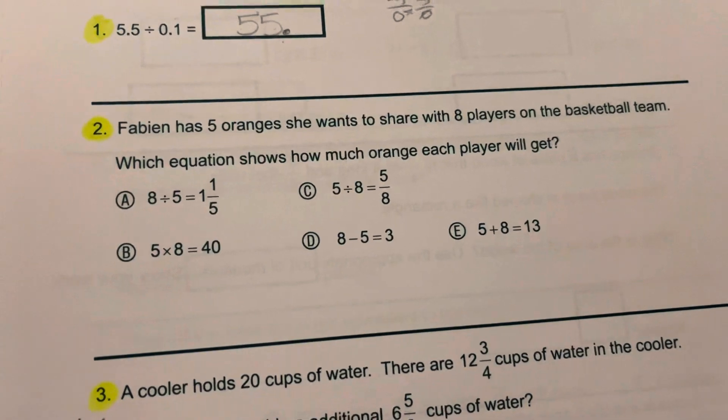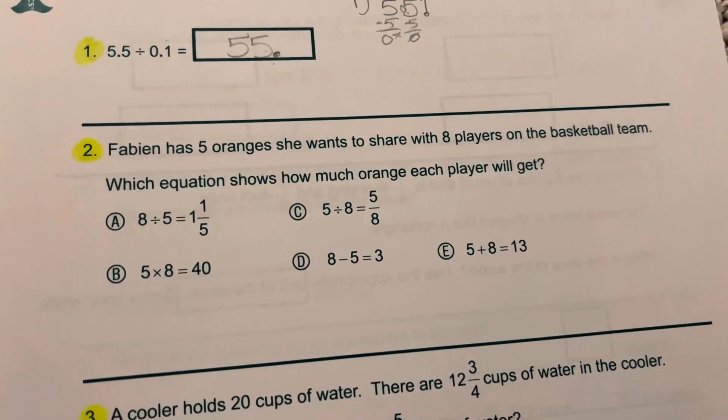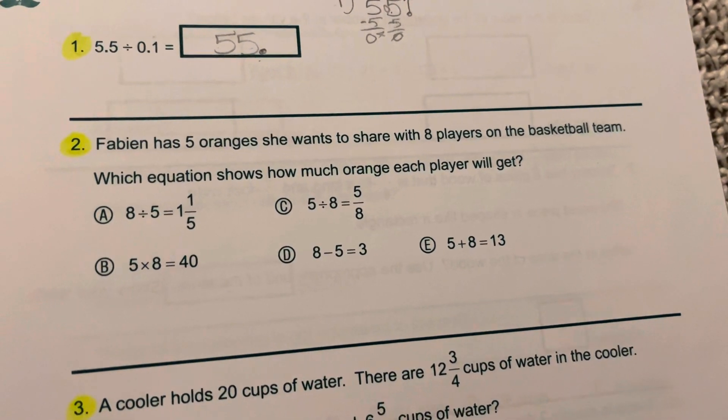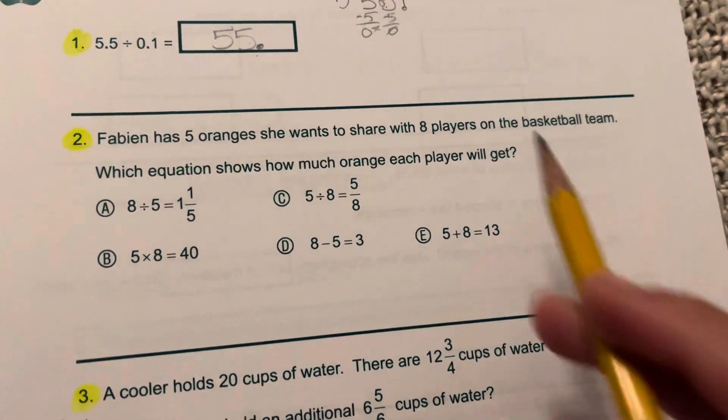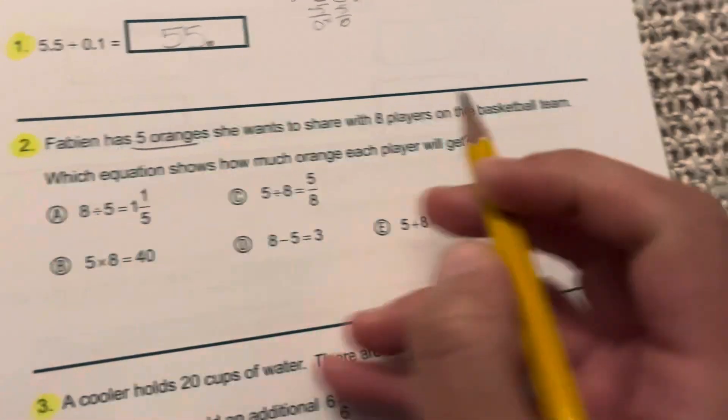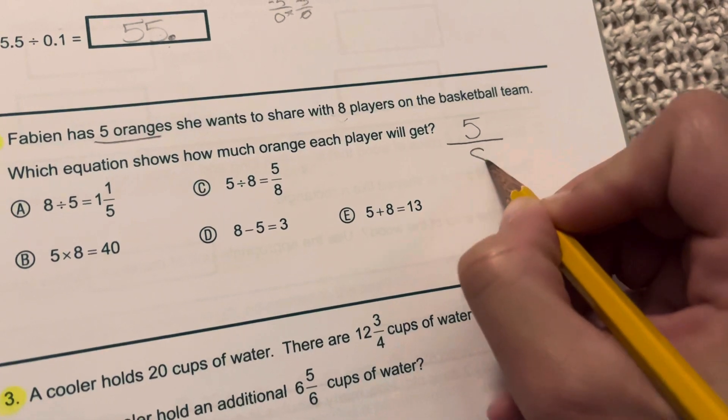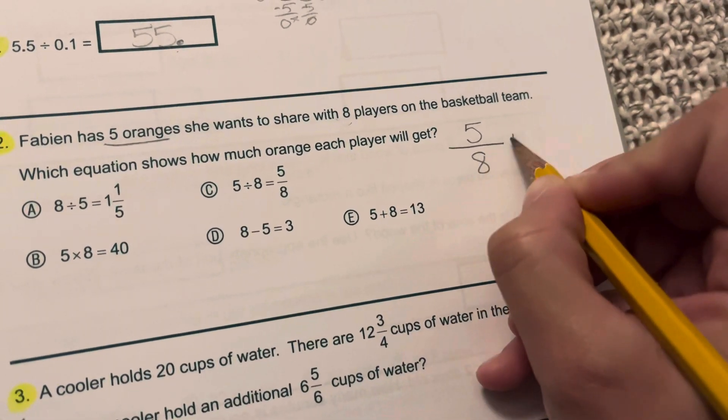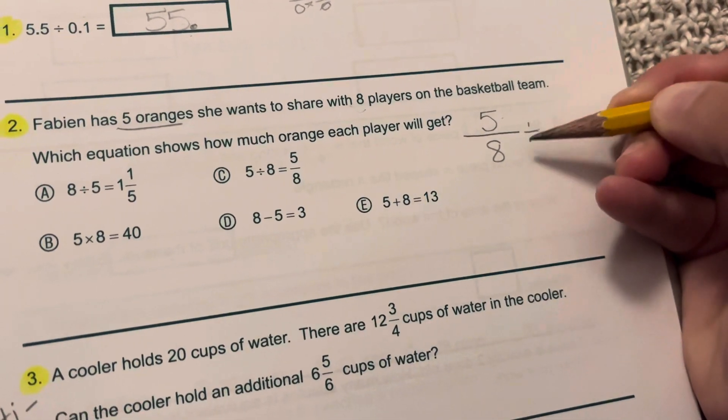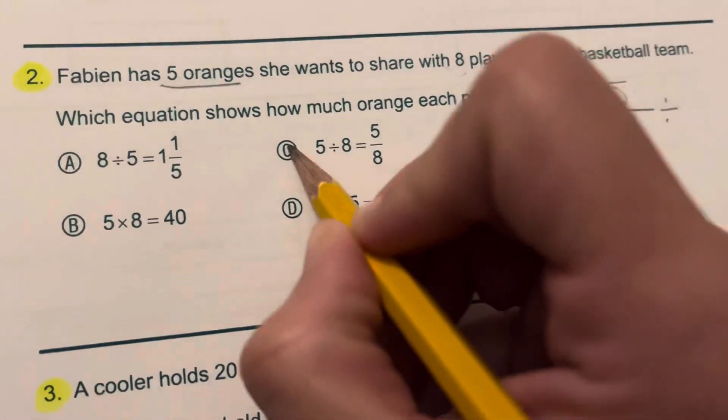We've been working on stuff like number 2. It says Fabian has 5 oranges. She wants to share with 8 players on the basketball team. Which equation shows how much orange each player will get? Well, we're not cutting up the people. What they're splitting and sharing are the oranges. So we're going to take the 5 oranges and we're going to divide by the 8 people. We've been working on fractions as division. This is 5 divided by 8. And the only answer choice that shows me 5 divided by 8 is C.